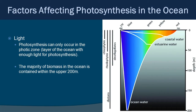Right up there with nutrients is light. Obviously, if you don't have sunlight, you don't have photosynthesis and you don't have productivity. Photosynthesis can only occur in what we call the photic zone — that layer of the ocean where there's enough light for photosynthesis. This tends to be in the first 200 meters of the ocean, and that's where the majority of the biomass in the ocean is. In the diagram to the right, you'll notice the rainbow of colors. If you've ever dived into the ocean, you probably noticed it looks very blue the deeper you go.